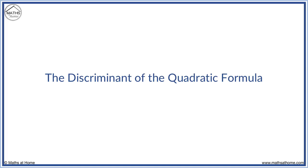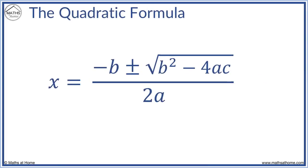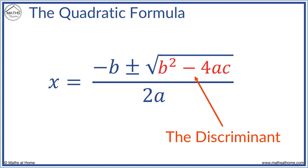In this lesson, we learn about the discriminant of the quadratic formula. The quadratic formula is x equals minus b, plus or minus the square root of b squared minus 4ac over 2a. It is used to calculate solutions to quadratic equations. The b squared minus 4ac part of this equation, inside the square root, is known as the discriminant. We will look at how the number of solutions to an equation depends on the value of the discriminant.